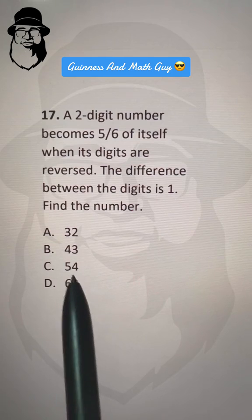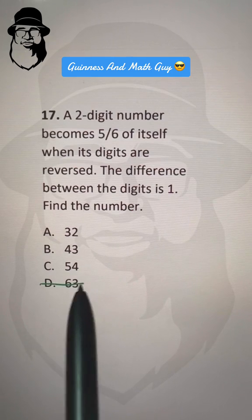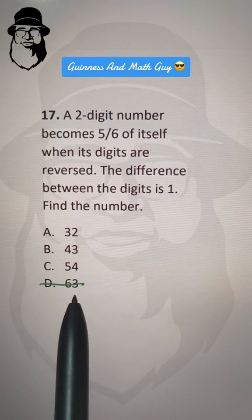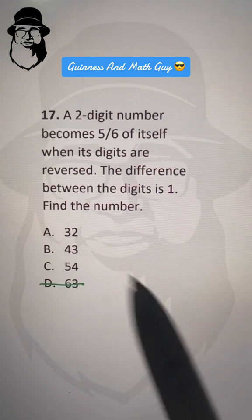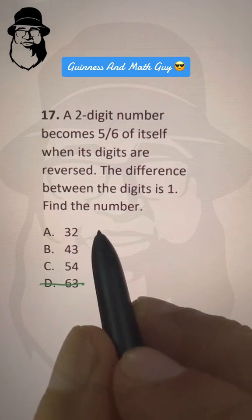3 and 2 is 1, 4 and 3 is 1, but here with 6 and 3 the difference is not 1, the difference is 3. So this choice is gone. Let's check the other choices from below, starting with 32.